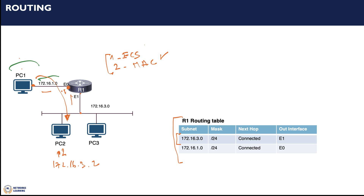An important point here: PC1 being able to send a packet to PC2, or R1 knowing a route to PC2, does not necessarily mean that PC2 can send traffic back to PC1. In this particular case, if PC2 wants to send traffic back to PC1, we have to ask whether R1 has a route for PC1's subnet. As you can see, it does — because it's directly connected. So you will have full two-way communication between PC1 and PC2.